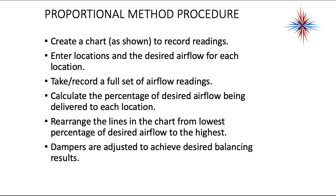The proportional method dials this in a bit further. To walk through the process: you create a chart to record readings, enter the locations and desired airflow for each location, take and record a full set of airflow readings, calculate the percentage of desired airflow being delivered to each location, rearrange the chart from the lowest to highest percentage, and then adjust dampers to receive the desired balancing results.